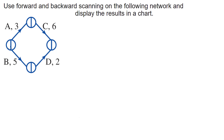The forward scanning starts from the left-hand side of the network and works all the way through to the end node. The left-hand node represents the start node and the right-hand node represents the end node. The forward scanning values go on the left-hand side of the nodes, and we always start at time zero — I'm starting this project right now. Then I start looking along all the paths available.